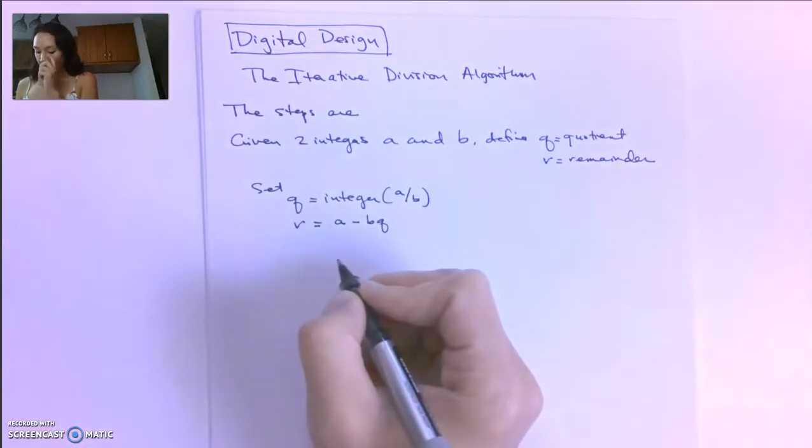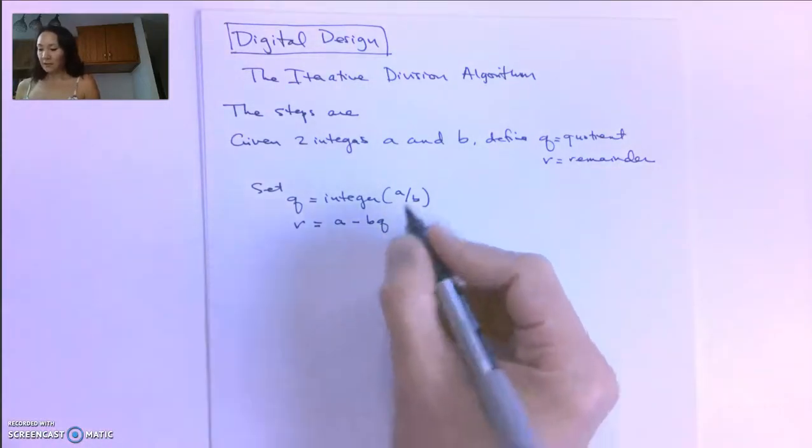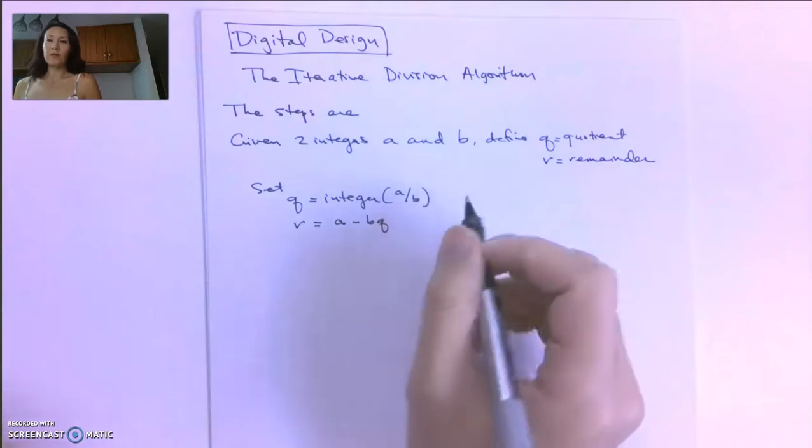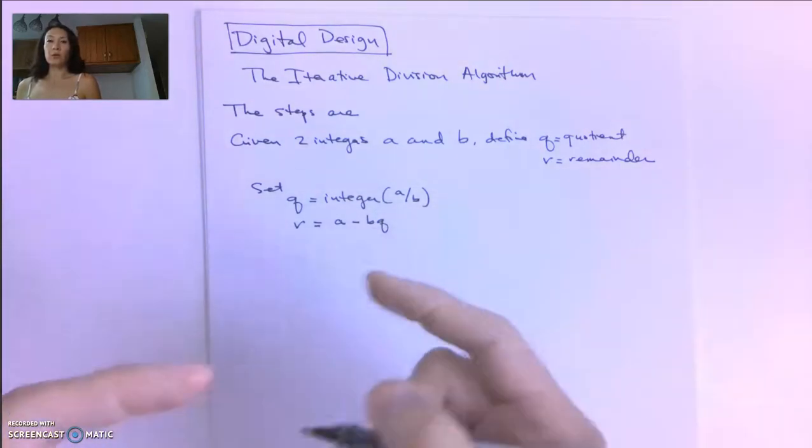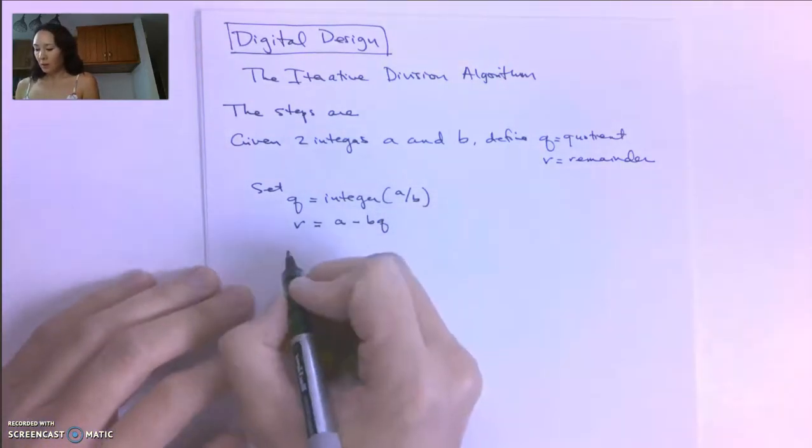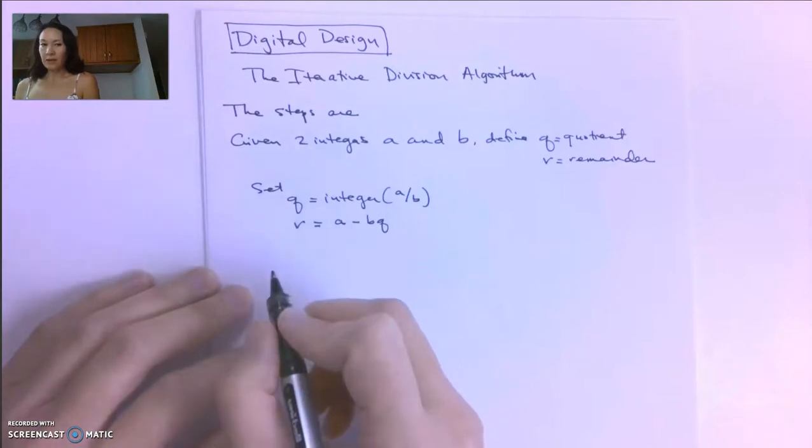And then, at that point, we want to test to see if Q is equal to 0. If it's not equal to 0, then we're going to repeat this with A set to Q.